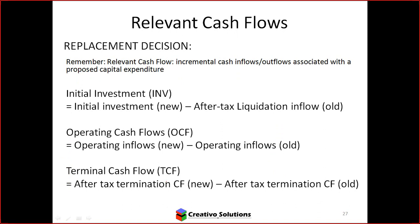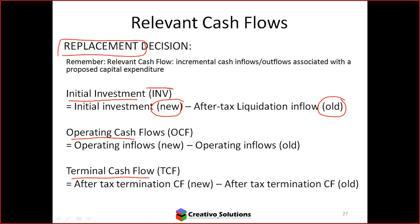The decision to replace involves relevant cash flows that affect decision making. If replacing an asset, I need to look at initial investment, OCF, and TCF — three separate calculations. For each one, I look at the new and the old. New minus old gives me the initial investment. The same applies for OCF — new minus old — and TCF — new minus old.